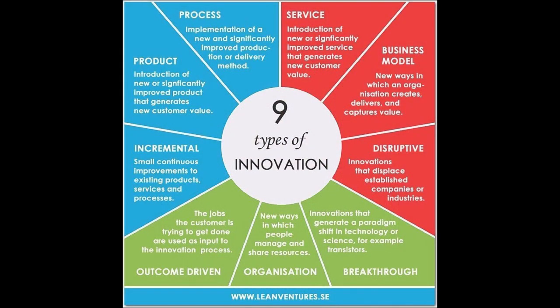I'm going to talk about what is going on. Innovation — creating something new — can be a lot of different things. On the slide here you see nine different types of innovation processes. It's important to figure out what kind of process you are doing and how it fits. It's also a matter of who the stakeholders are and how they inflict on what's going on. Of course it's easy to think about it in a business model, but perhaps not as easy in an incremental or more process-oriented innovation.